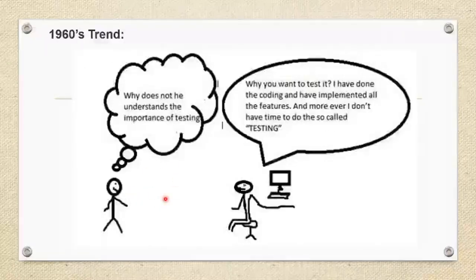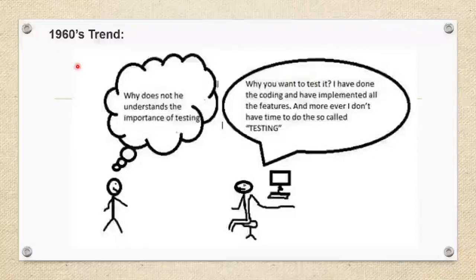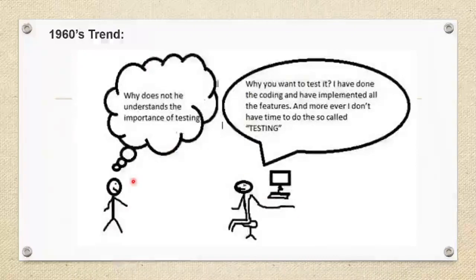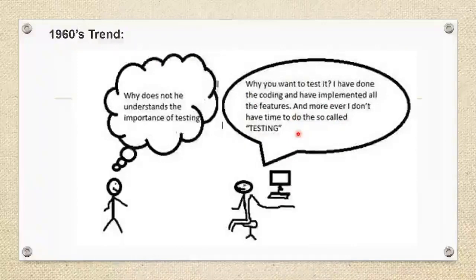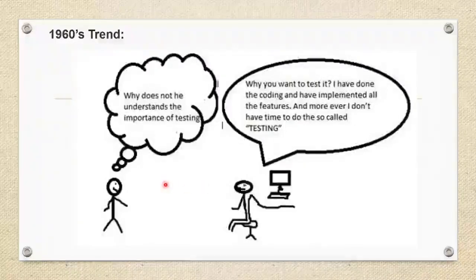Let us understand how the trend was in earlier days between the tester and the developer. In the 1960s, the software tester's situation was like asking why the developer doesn't understand the importance of testing, while the developer's situation was: why test at all? I have done the coding and implemented all the features, and moreover I don't have time to do the so-called testing. This happened because in earlier days, softwares were used in very few important places, so there was very little focus on testing.